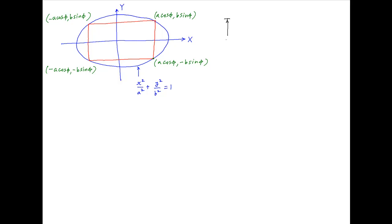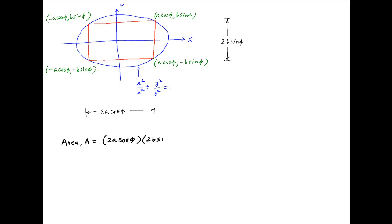Therefore, the lengths of the sides of the rectangle are 2b sin φ and 2a cos φ. Therefore, the area A is equal to 2a cos φ times 2b sin φ, which can be written as 2ab sin 2φ.